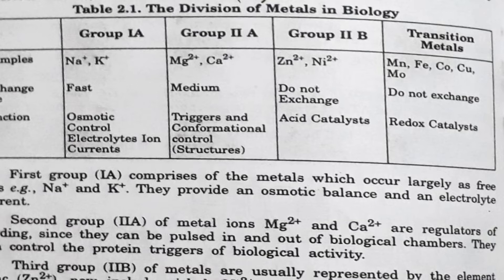As you know, living organisms store and transport metal ions in appropriate concentrations to carry out various biological functions. The important metal ions in biological systems can be divided into four major groups shown in the table. The first group comprises metals which occur largely as free ions, such as sodium and potassium, which provide osmotic balance and electrolyte current.